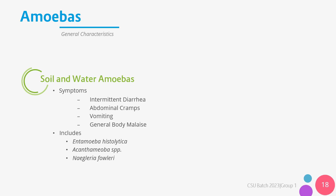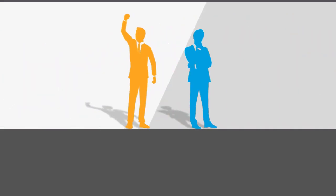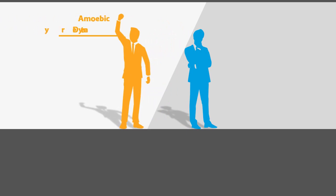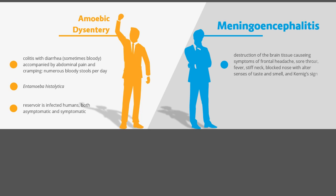These protozoa cause a variety of diseases, which include amoebiasis, amoebic dysentery, amoebic hepatitis, and pulmonary amoebiasis. Amoeba can either infect the mouth and intestines, or the brain and the eyes. Two common diseases caused by pathogenic protozoa are amoebic dysentery, if the parasite infects the mouth and intestines, and meningoencephalitis, if the parasite infects the brain. If the patient presents with colitis with diarrhea which will sometimes be bloody, abdominal pain and cramping, this may have been caused by Entamoeba histolytica and might be amoebic dysentery.